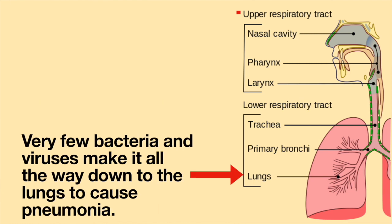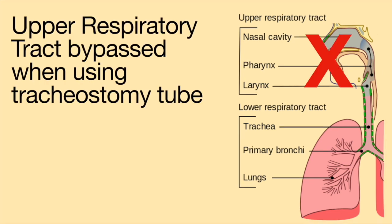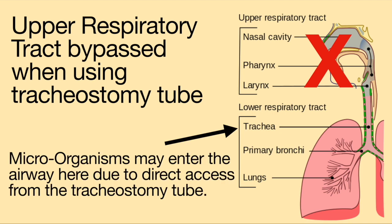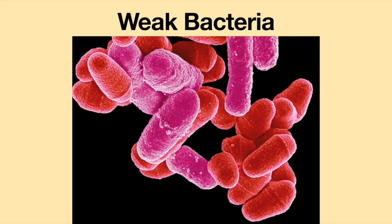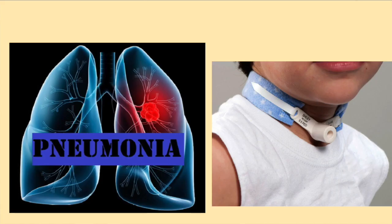Very few bacteria and viruses make it all the way down to the lungs to cause pneumonia. With a tracheostomy tube, the immune system is bypassed. Air enters the trachea and travels to the lungs. There are few defense systems this low in the respiratory tract. This means very weak viruses and bacteria, which would not cause illness in the normal population, may cause pneumonia in someone with a tracheostomy tube.